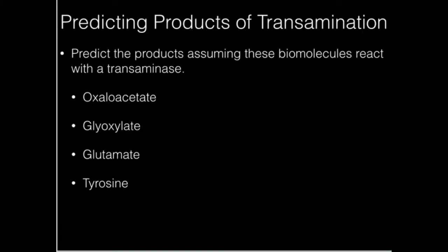Now we're going to practice naming some products of transamination. We're going to predict the products, assuming we have a transamination, for oxaloacetate, glyoxylate, glutamate, and tyrosine.